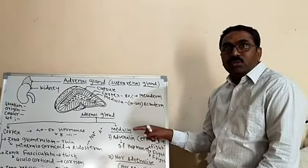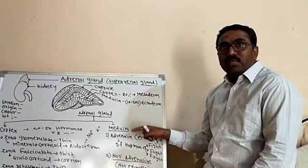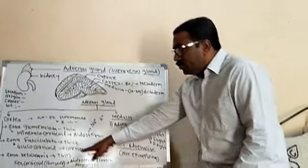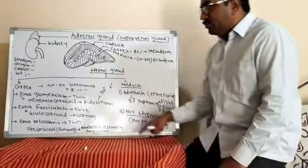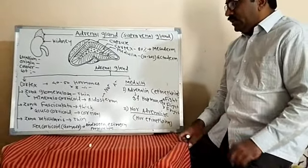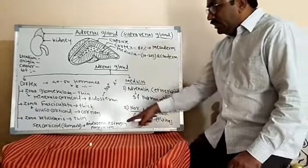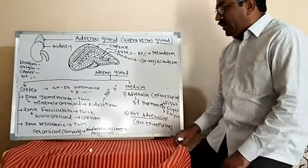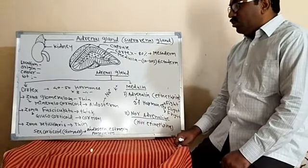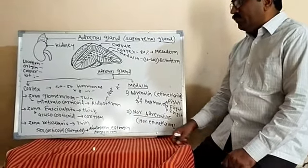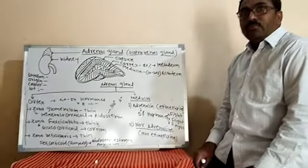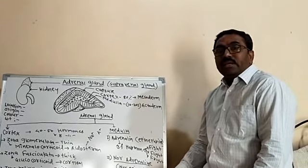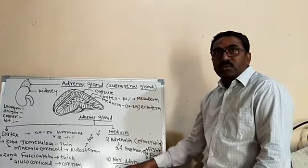In the zona reticularis, these hormones include androgen, estrogen, and progesterone. These are male and female sex hormones. They control secondary sexual characters in both males and females.